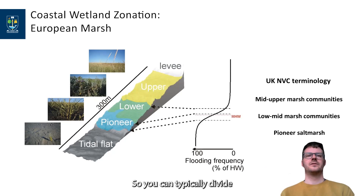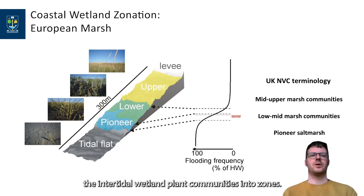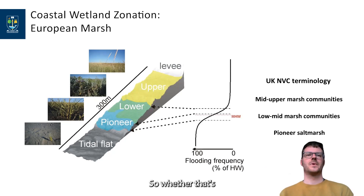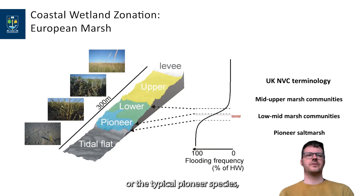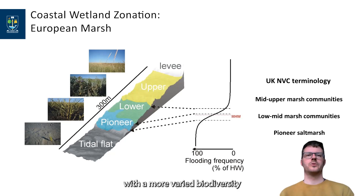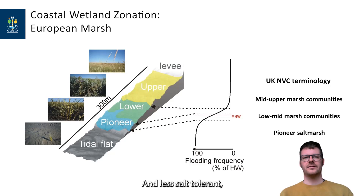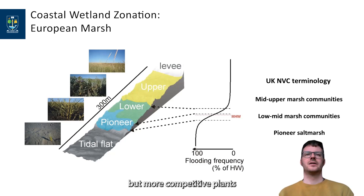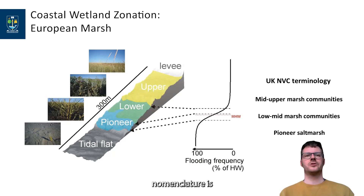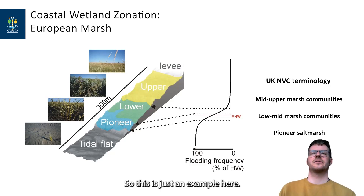You can typically divide the intertidal wetland plant communities into zones. In a salt marsh, you'll have a pioneer zone with typical pioneer species — the ones I've shown here, Salicornia and Spartina. Then a lower salt marsh zone with more varied biodiversity of salt marsh plants, and an upper zone where some of those salt marsh plants start to disappear and less salt-tolerant but more competitive plants can occupy the upper areas. Note that this zonation nomenclature differs between countries and regions, so this is just one example.